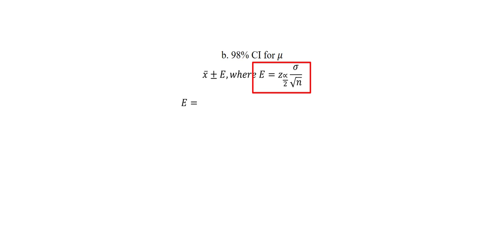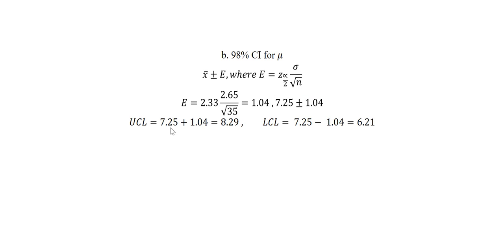Now we go ahead to compute the margin of error. When we obtain this value which is 1.04, we are going to be adding and subtracting to our sample mean. So when we do that, we get the upper confidence limit by adding our x̄ to the margin of error, and then the lower confidence limit by subtracting the margin of error from x̄. Once we get the upper confidence limit and the lower confidence limit, we can write down the confidence interval in this way.